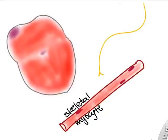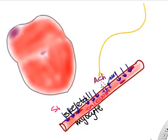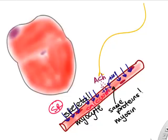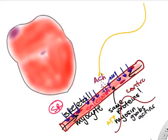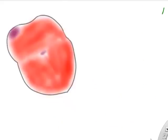Skeletal muscle is similar but slightly different: it needs acetylcholine from a neurotransmitter to allow sodium in and trigger an action potential, which releases calcium from the SR, causing myosin to grab actin and producing contraction. Cardiac and skeletal myocytes share many mechanisms with slight differences.